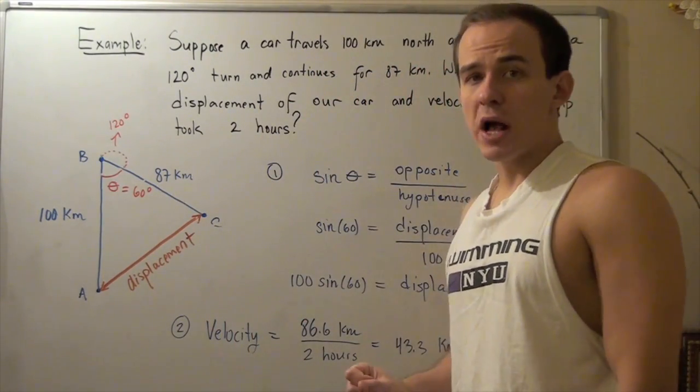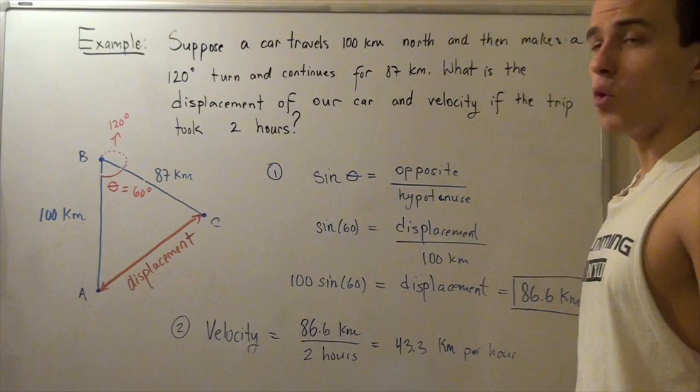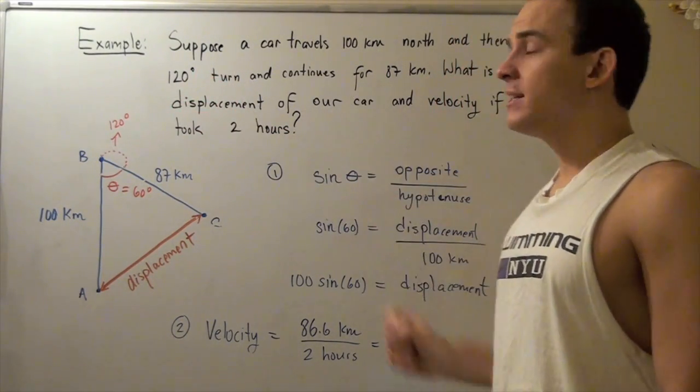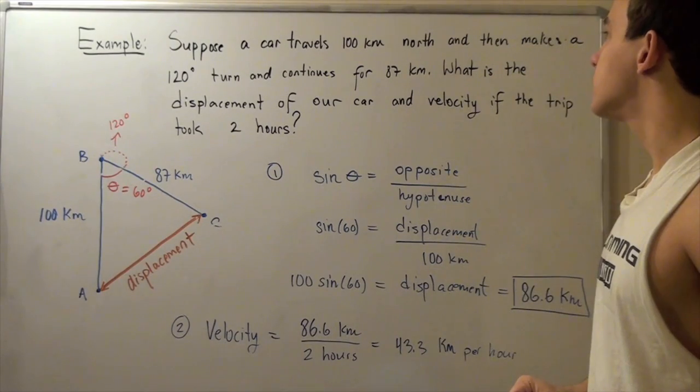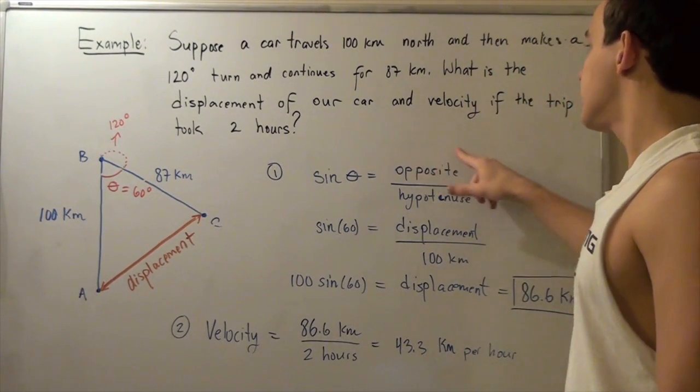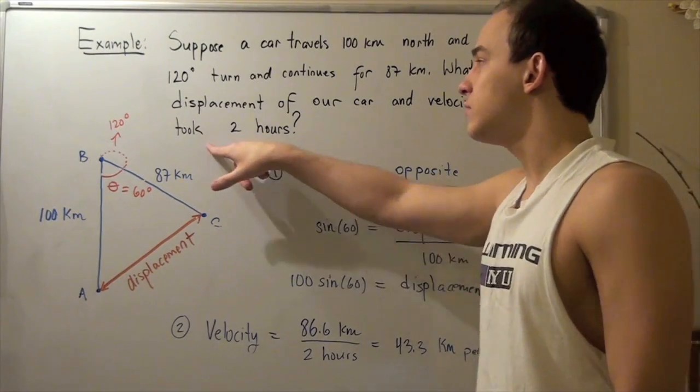Suppose a car travels 100 kilometers north and then makes a 120 degree turn and continues for 87 kilometers. What is the displacement of our car and velocity if the trip took a total of two hours?